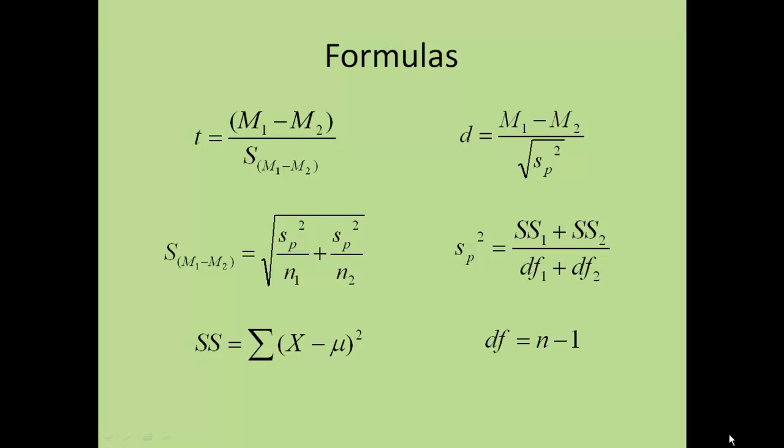When we're looking to calculate our t, you can see that in the top left-hand corner is the formula for the t-test. The t-test needs that you need to know the means, and you need to know the standard error of the mean. Then we have a formula for the standard error of the mean, and to calculate the standard error of the mean, you need to know the pooled variance and the number of data points you have in your sample.